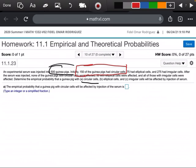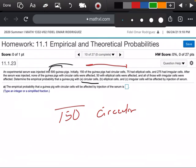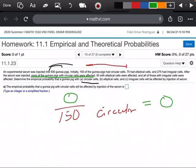So when I'm doing part A, we know that there's 150 that have circular cells. I'm going to erase a little bit because I don't want to mess anything up here, but if you notice right here, it says none of the guinea pigs with circular cells were affected, so none of them would be zero, so zero out of 150 is just going to be zero.